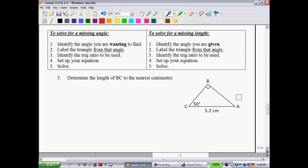All right, so what I've prepared for you guys here is a little bit of a summary. So let's look at the left-hand one first to solve for a missing angle. You identify the angle that you're wanting to find. Label the triangle from that angle. Identify the trig ratio you need. Are we dealing with sine, cosine, or tangent? Set up your equation and solve. Now, to solve for a missing length, identify the angle you are given. Label the triangle from that angle. So you'll label it with adjacent, opposite, hypotenuse. Identify the trig ratio to be used, which one of those three. And then, set up your equation and solve.